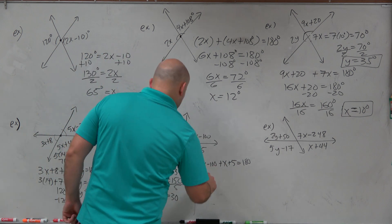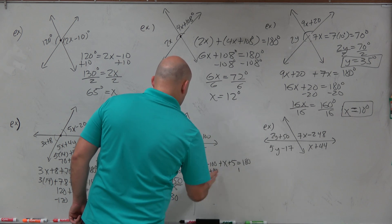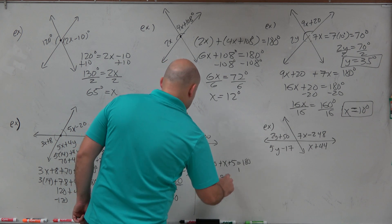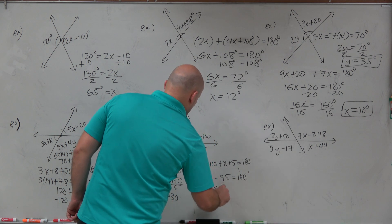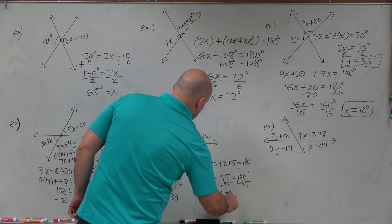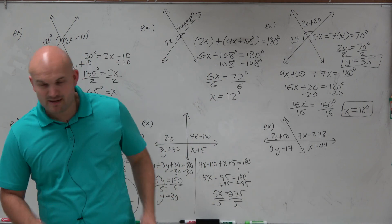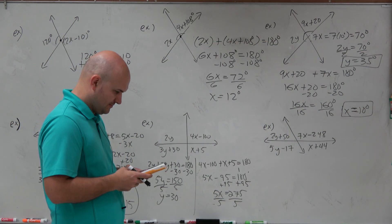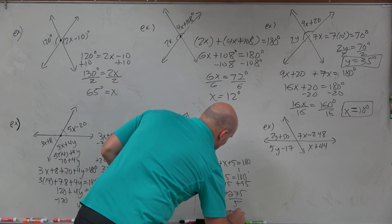For x: 4x minus 100 plus x plus 5 equals 180, which simplifies to 5x minus 95 equals 180. Add 95 to both sides: 5x equals 275. Divide by 5: x equals 55.